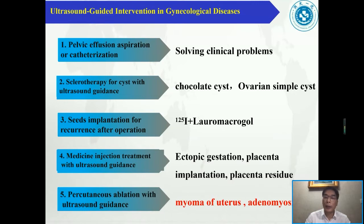Three: seed implantation — we usually implant I-125 particles, sometimes combined with lauromacrogol injection. Four: medicine injection — we apply this to treat ectopic gestation, placenta implantation, and placenta residual. Five: percutaneous ablation — this is today's main topic. We treat myoma or adenomyosis with ablation.